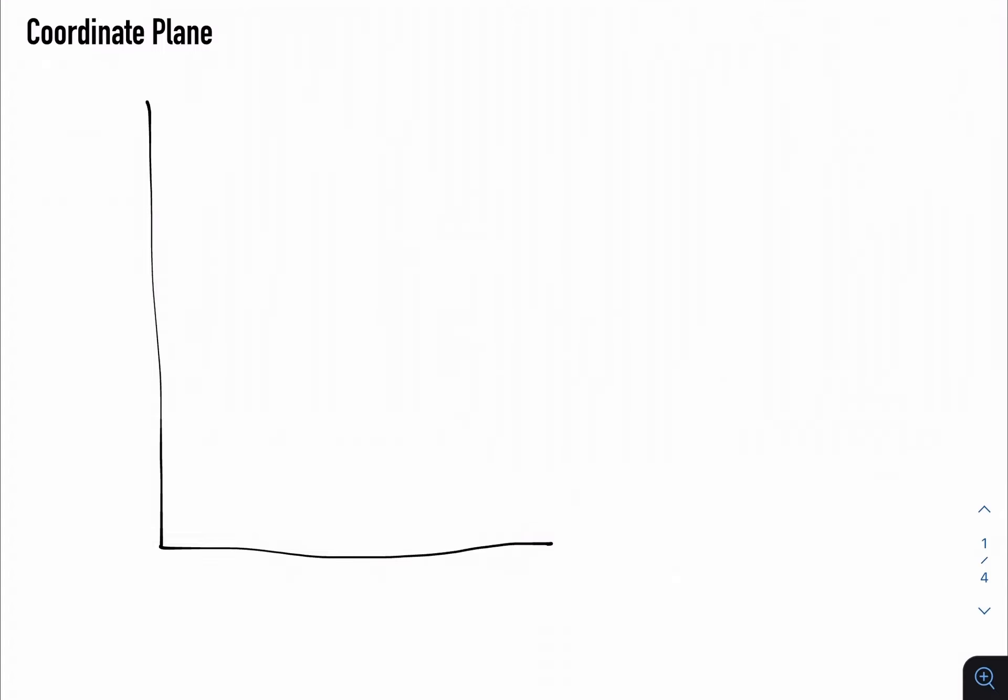So the horizontal line on the bottom is called the x-axis. And the vertical line on the top is called the y-axis. The point where they meet is over here, and it's called the origin. And you can write it as (0, 0).